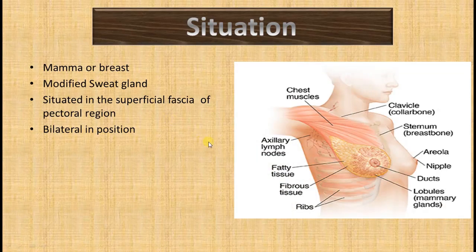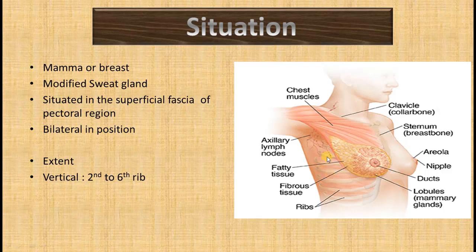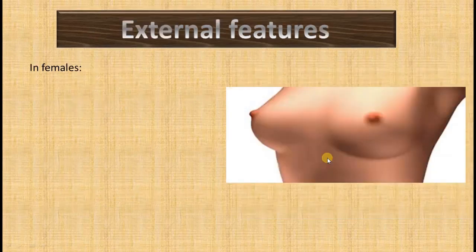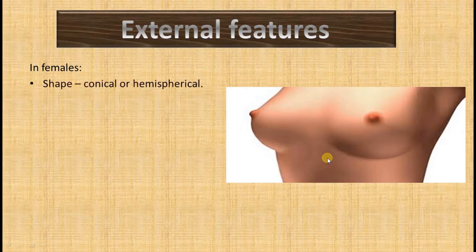Coming to the extent of the mammary gland: the vertical extent is from the second to the sixth rib, and horizontally it extends from the lateral border of the sternum to the midaxillary line. In females, the mammary gland is spherical or pendulous — it differs — but the base of the gland is mostly circular in shape.